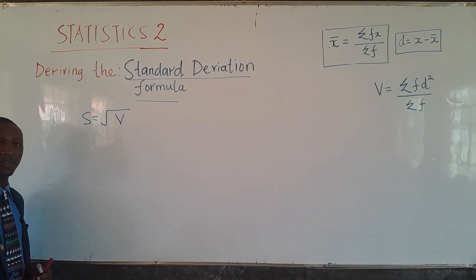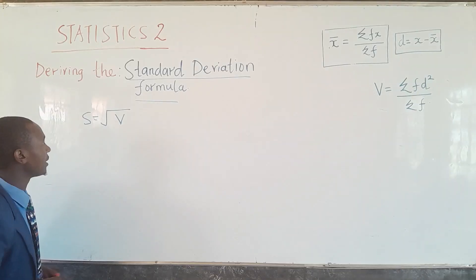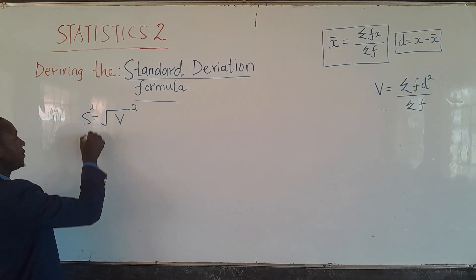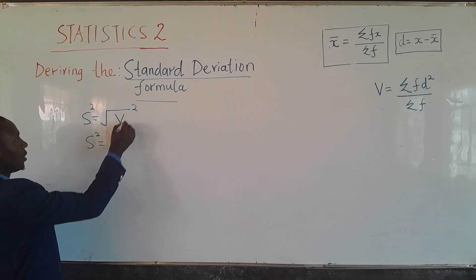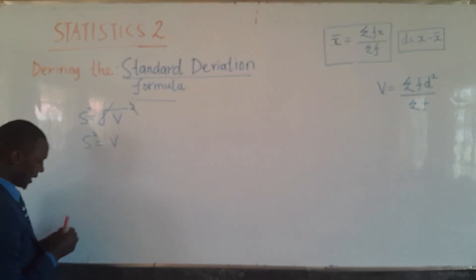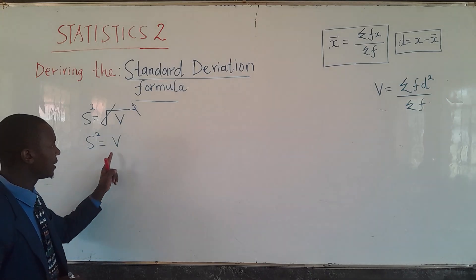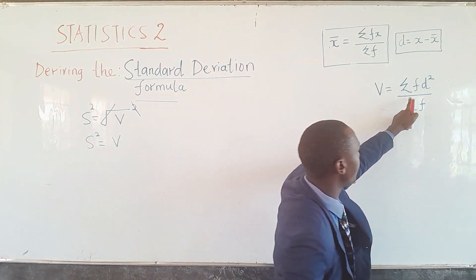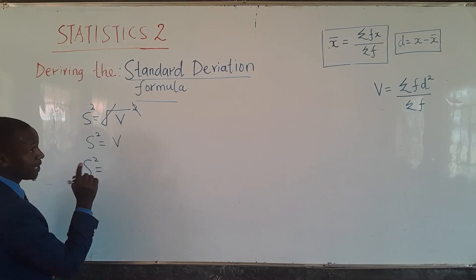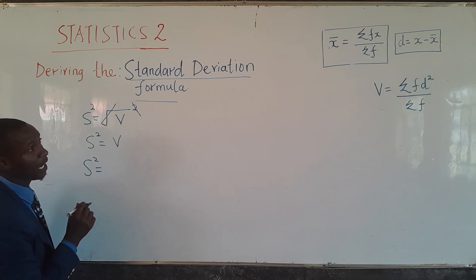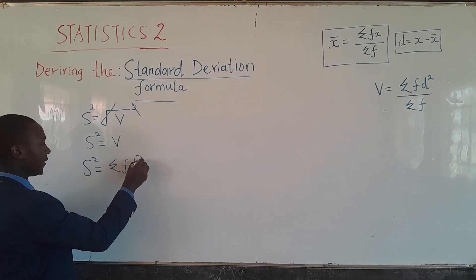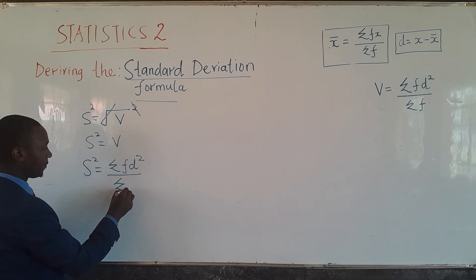You take the square root of the variance to get the standard deviation. If we square both sides, then s² equals the variance. Now if we replace variance with its formula, we get s² equals summation of fd² divided by summation of f.